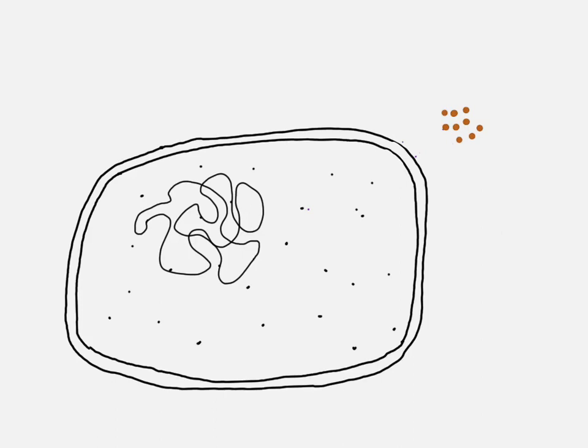So the other thing that prokaryotes are often able to do is actually move. They're actually able to move in the direction of various stimuli, so that's showing sensitivity. And the way that they often do that is using the flagellum. So here we can see the flagellum.